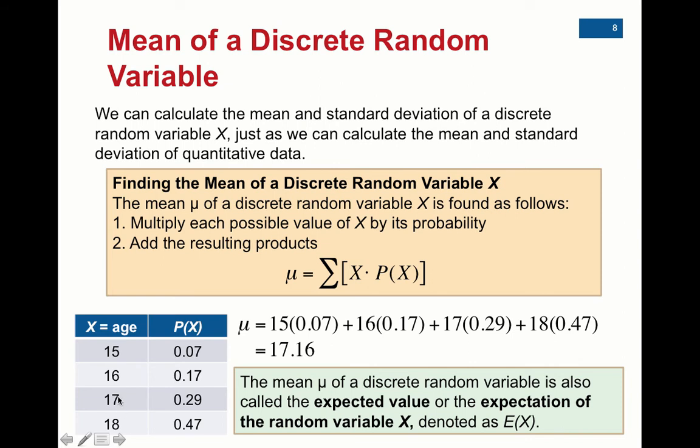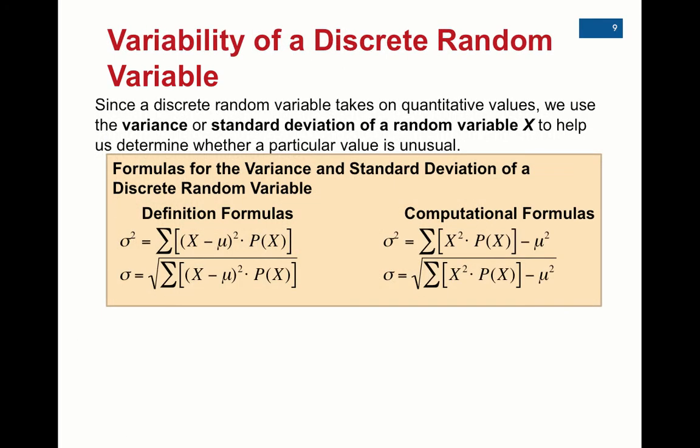17.16. Now, clearly nobody is 17.16 years of age. They're either 17 or 18. So remember, it's the expected value. If we were to take an average over many, many courses with many, many students, we would see that the average age would be about 17.16.